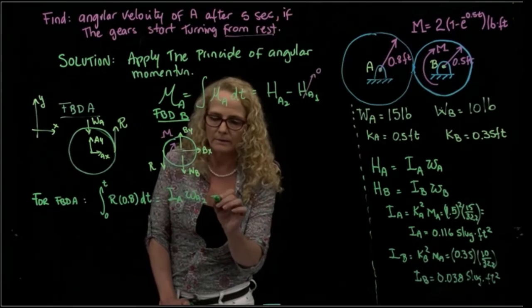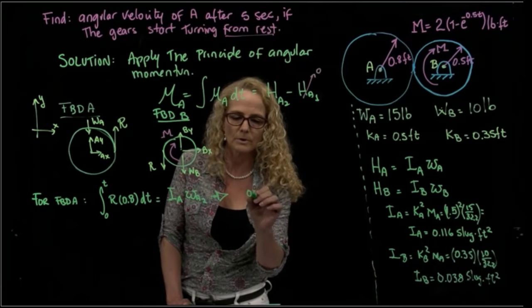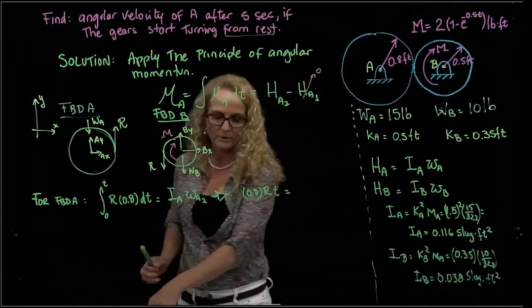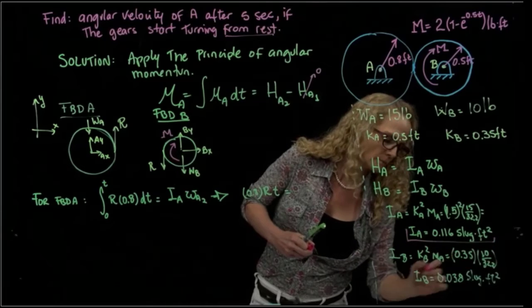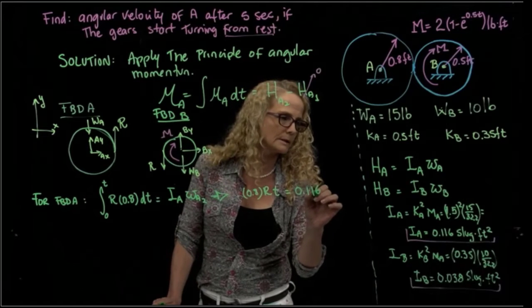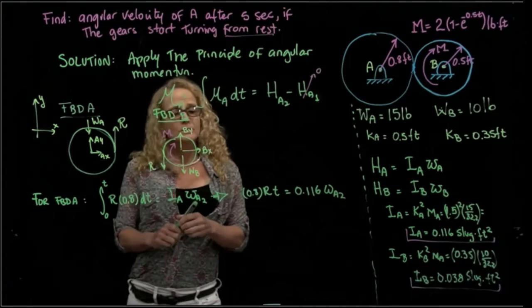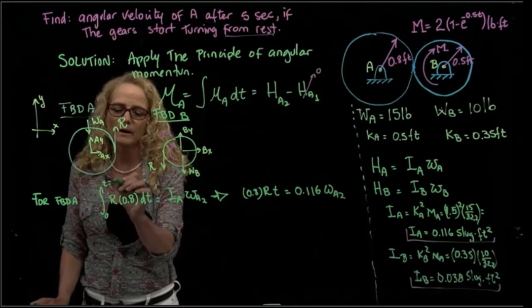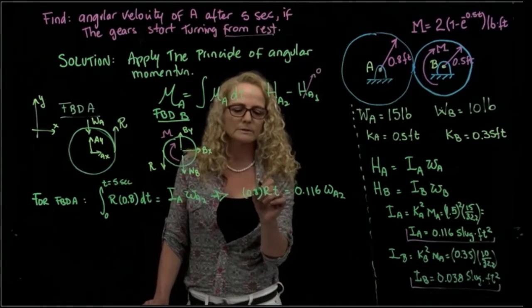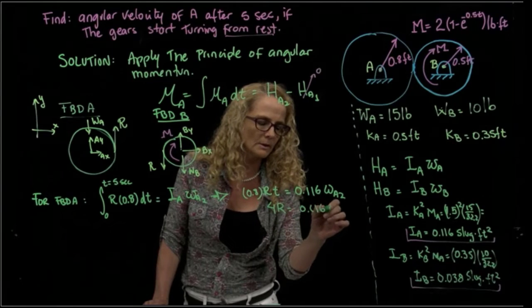We integrate that, and we have our first equation will be equals to 0.8 times my reaction times time equals to that moment of inertia that I calculated here, 0.116 times the velocity A2. And actually, I can say that if the time is 5, right, seconds, I finally can substitute for 5, and I get the equation. This is 0.8 times 5 will be 4R equals 0.116 omega A2.